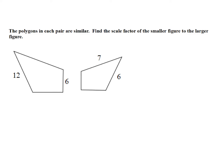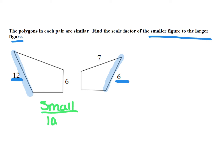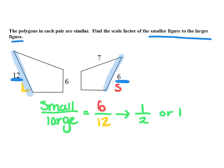Now let's practice determining the scale factor. If the polygons in each pair are similar, find the scale factor from the smaller to the larger figure. I have to match up corresponding sides: the side of length 12 matches to the side of length 6, but since we need small to large, the smaller one is 6 over the larger side 12. When I simplify this, it becomes 1 half, so the scale factor is 1 to 2.